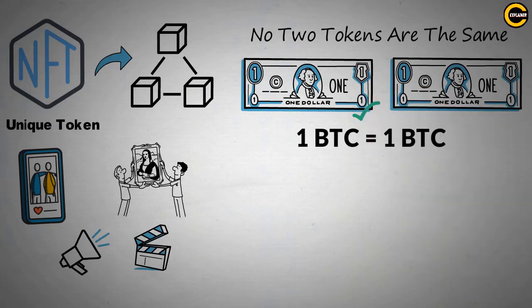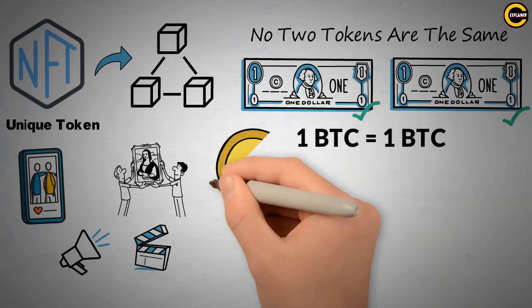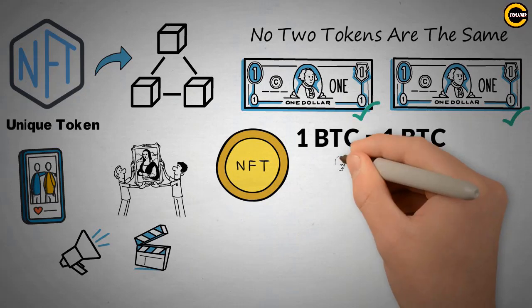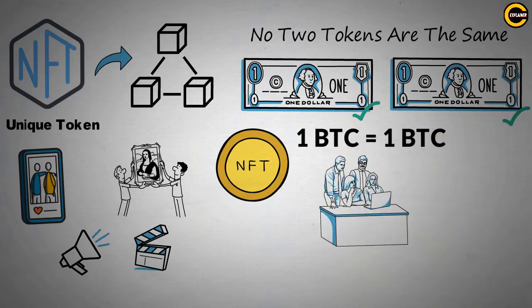Dollar bills have serial numbers but can be exchanged. A non-fungible token works differently, in that it is unique on the blockchain for everyone to see and authenticate.